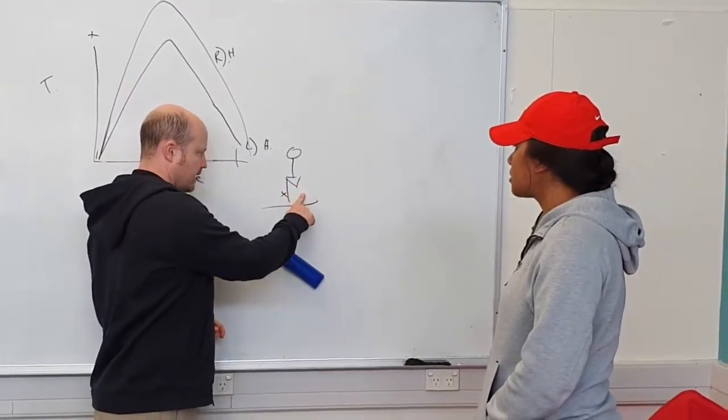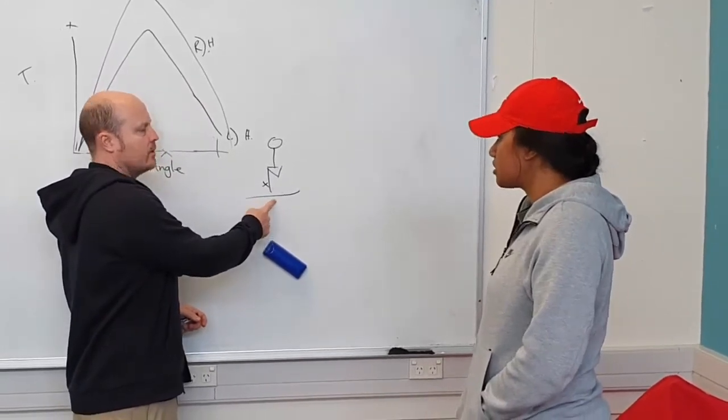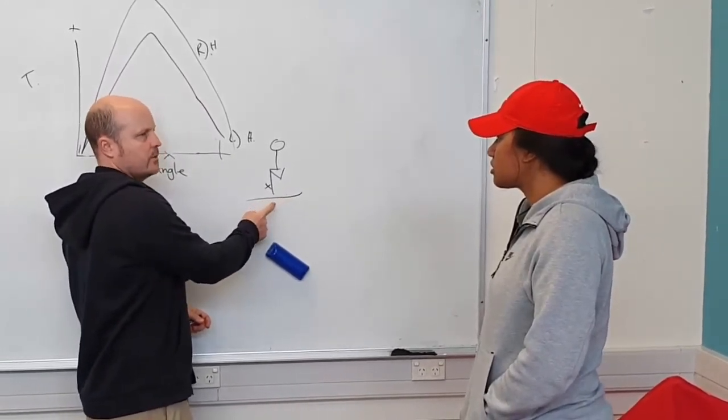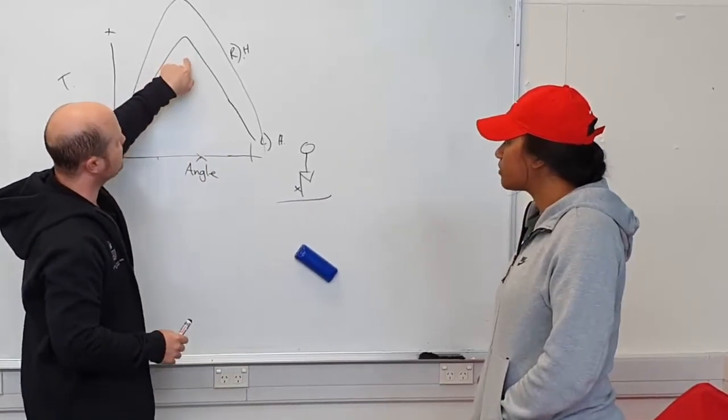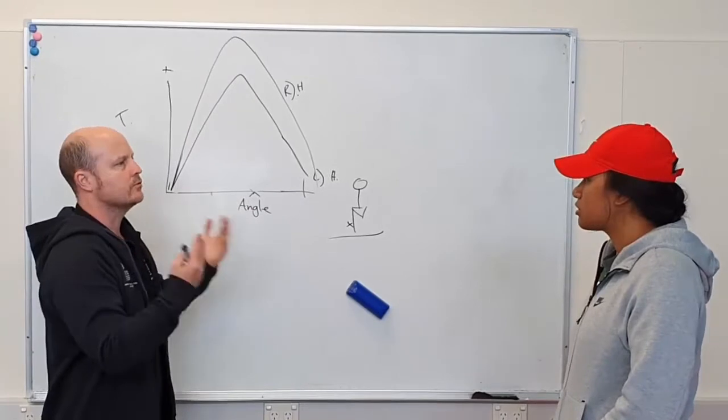Whereas if we do unilateral training, then if it's only one leg pushing, we know all the work is going through one side. So if we've got an imbalance between our left and right, we do unilateral training to correct that imbalance.